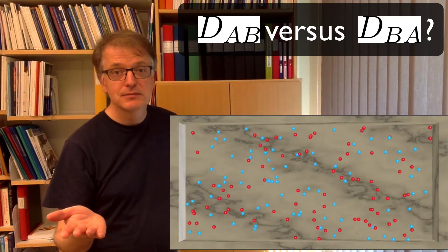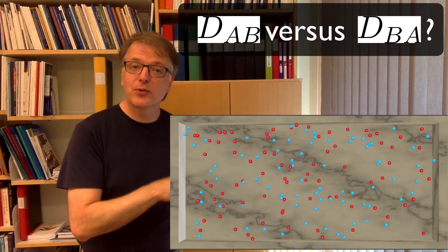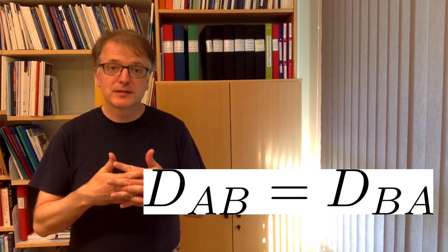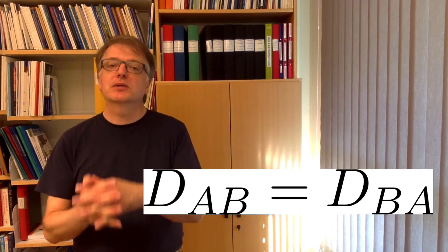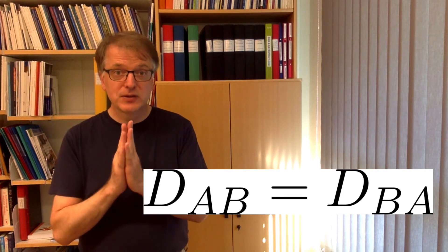Yeah, of course, because the blue molecules can't be mixed with the red if the red aren't mixed with the blue, right? So they have to be both mixed. So D_BA equals D_AB. And that's the simple answer to that question.